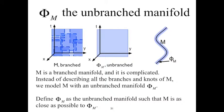M is a branched manifold with many branches, and it is complicated. But instead of describing all the discrete branches and knots of M, we will model M with an unbranched manifold that we will call Φm. We define Φm as the unbranched manifold such that M is as close as possible to Φm. In the diagrams, we see a complicated branched manifold with many separating and recombining branches. In the middle diagram, we see an unbranched manifold Φm that we will use to model the branched manifold M.